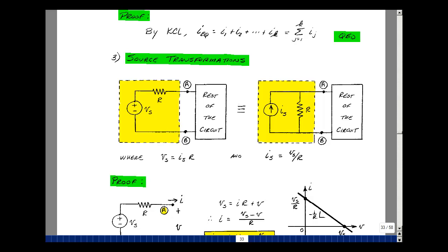This property is called source transformations. Suppose that I have a voltage source and a series resistance. I've got some other circuitry hooked up here. I replace this by a parallel combination of a current source and a resistance. If I pick this current source, equal the voltage that was here divided by the resistance. And then I take the resistance that's here and put it over here.